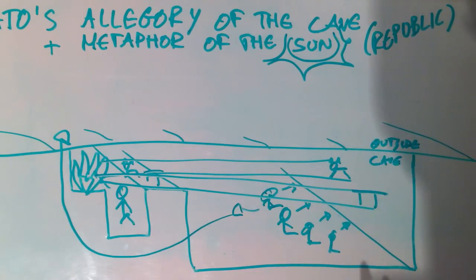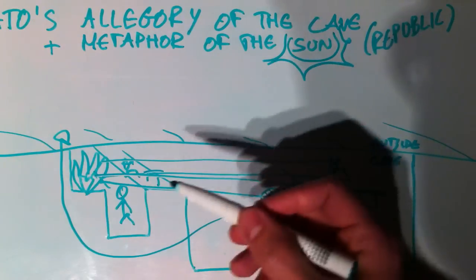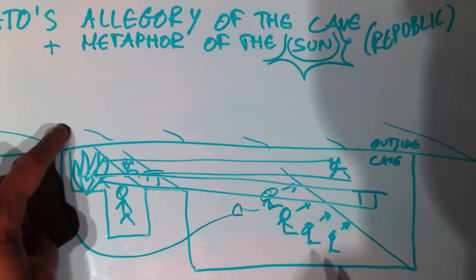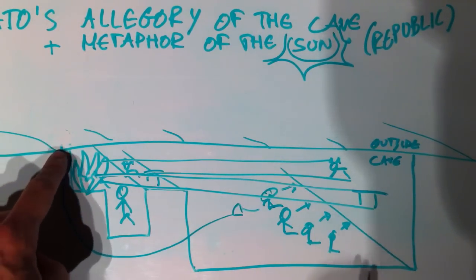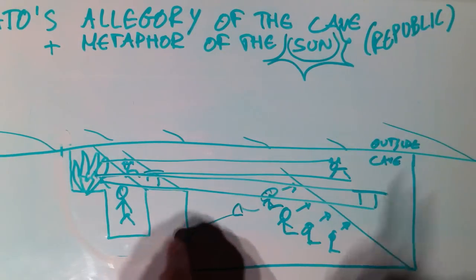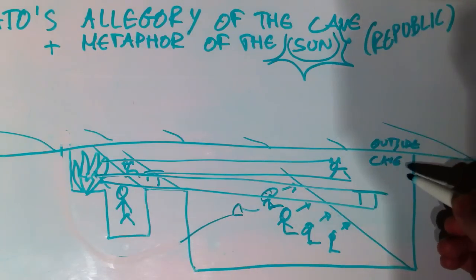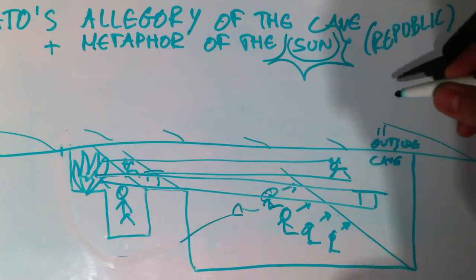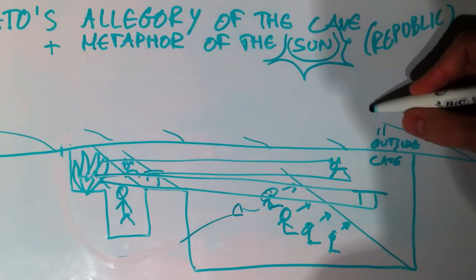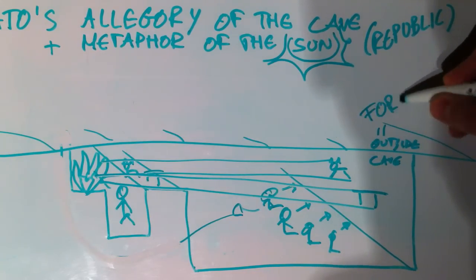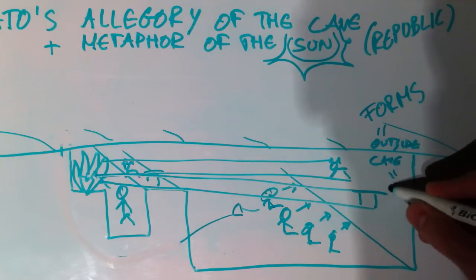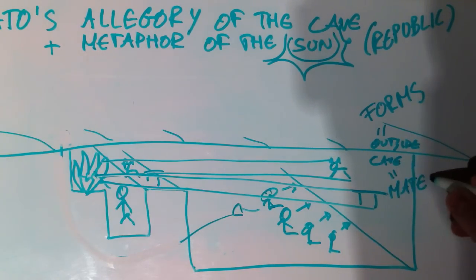And what does Plato mean by this exiting of the cave? Well, we can easily relate it to what we've seen in the last tutorials. The outside of the cave and the inside of the cave correspond to the two realms we have been talking about. The one is the realm of forms, and the other is the realm of material things, the material objects.